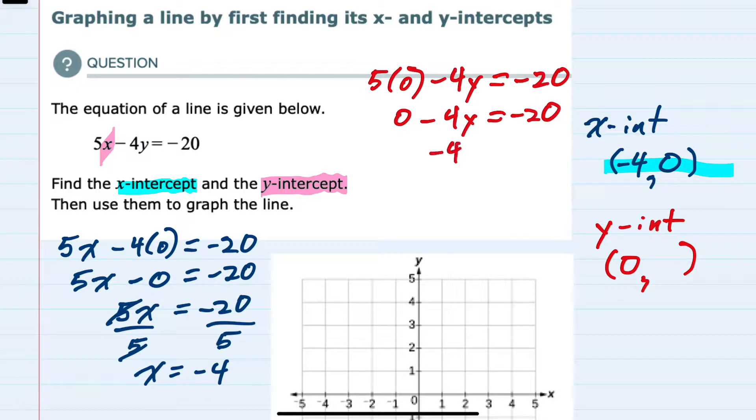So negative 4y equals negative 20. Solving for y, we divide by negative 4, so y equals 5. So we have now found our y-intercept.